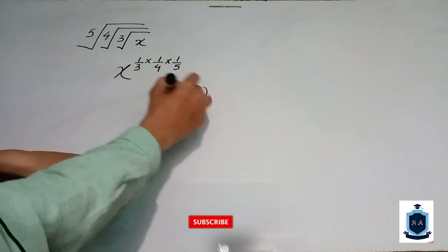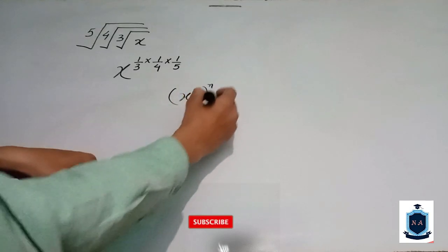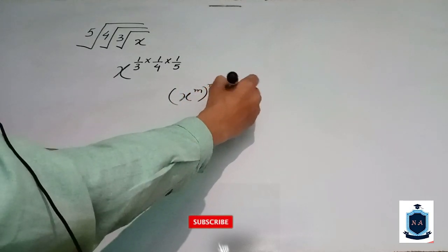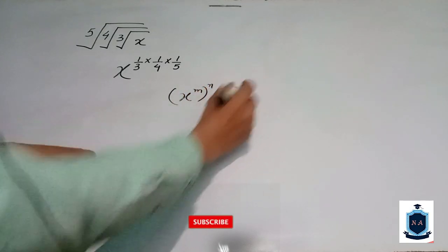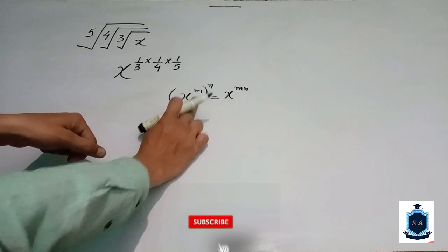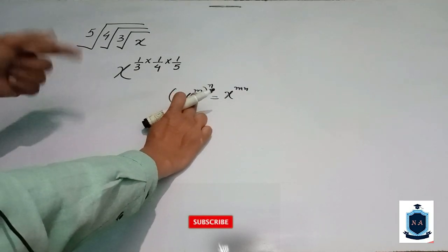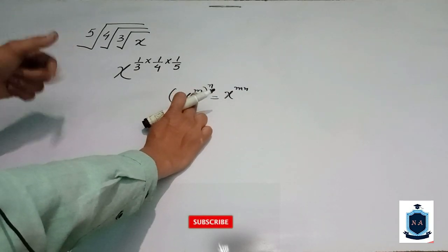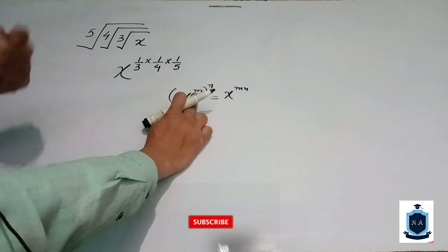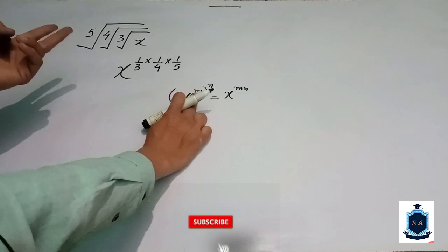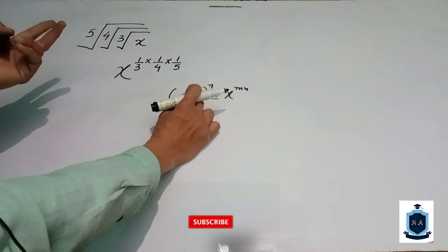Powers multiplied with the power, x power m. Here you can see that if the m is 1 upon 3, 1 upon 4, or 1 upon 5, the power will multiply the power.